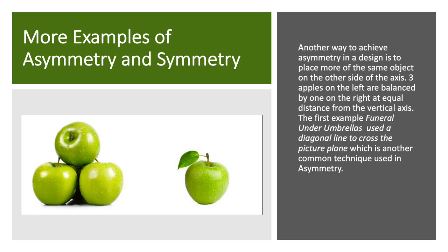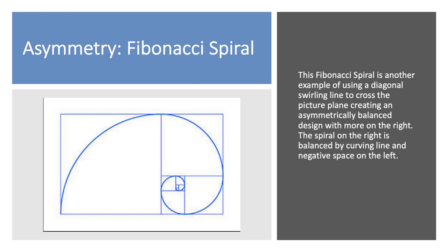Looking at more examples of asymmetry and symmetry: in one, you simply have more placed on one side of your axis than the other — three apples on the left and one on the right, and they balance each other out. The Fibonacci spiral is another example of an asymmetrical design where almost all of the visual weight is on the right-hand side, and then you have the swirling line which moves you over to the left — that line in the negative space creates balance.